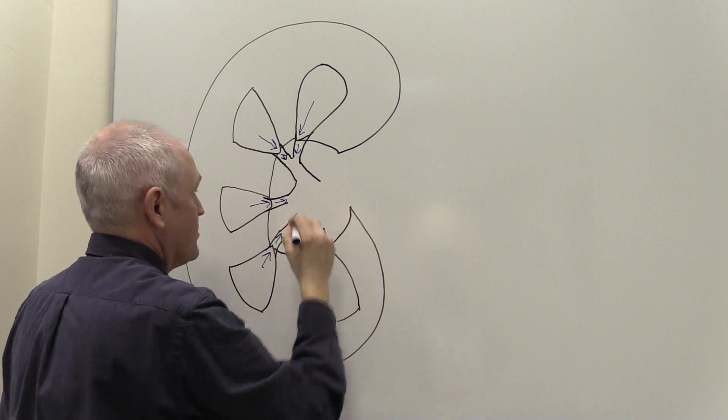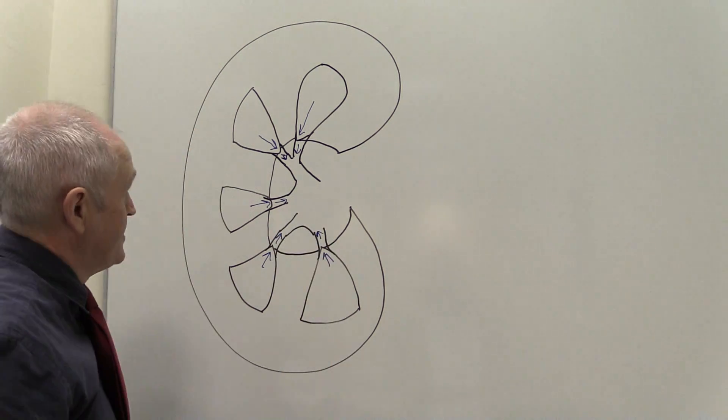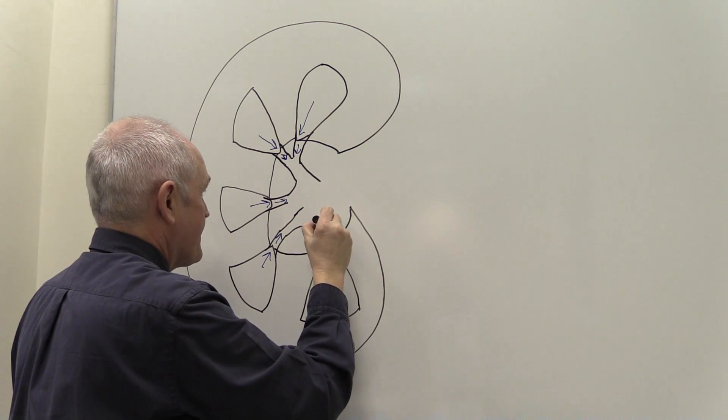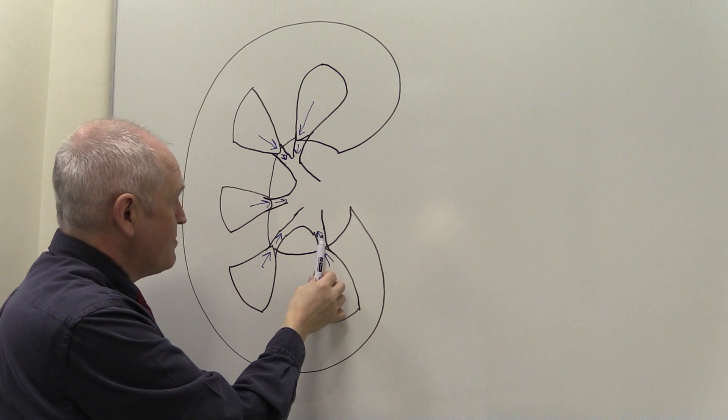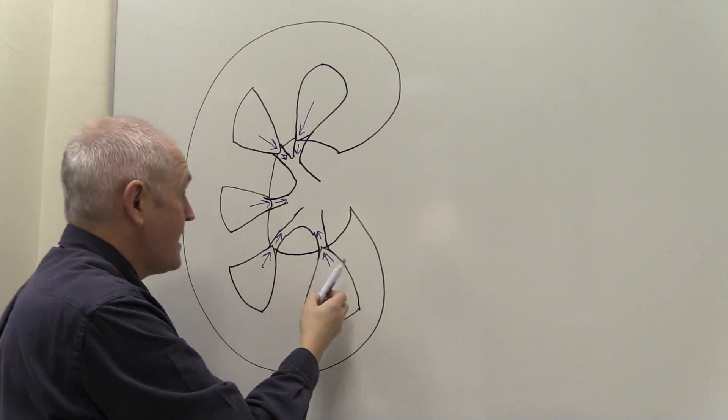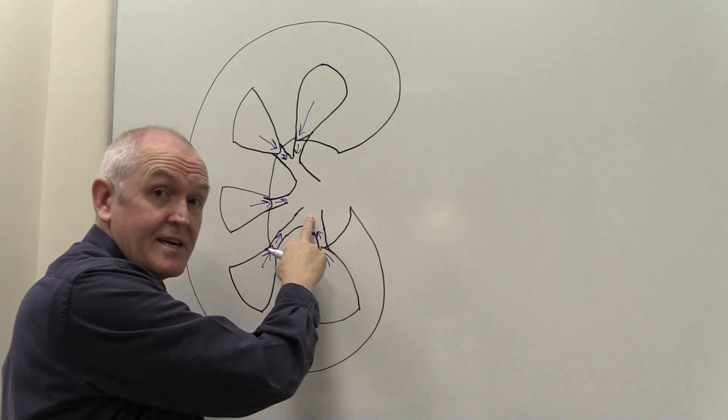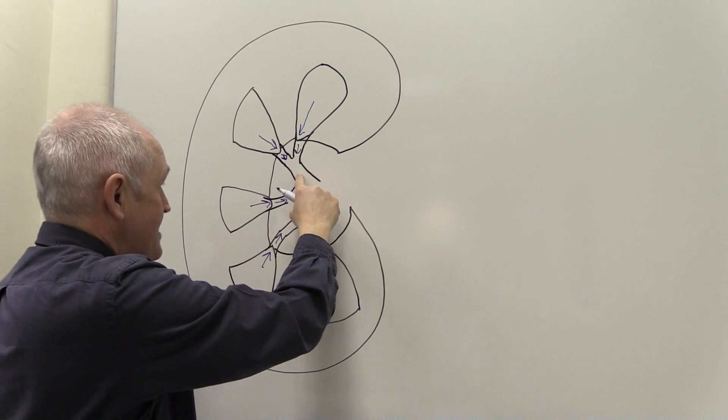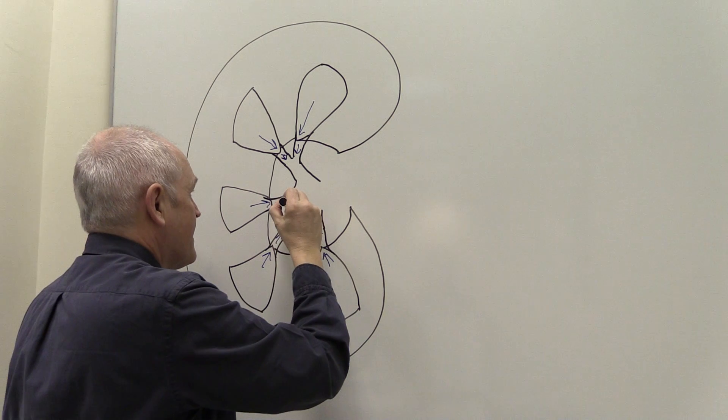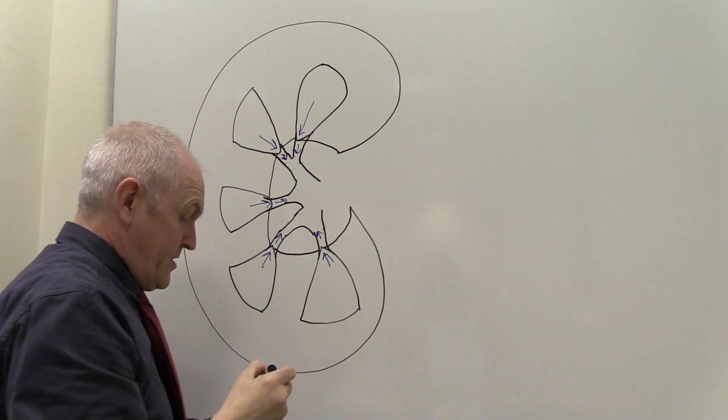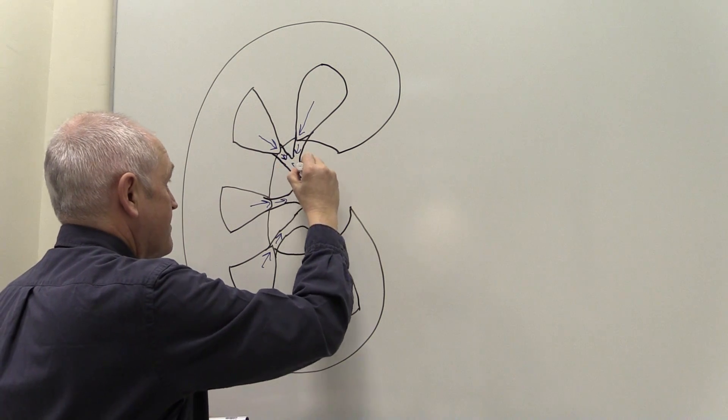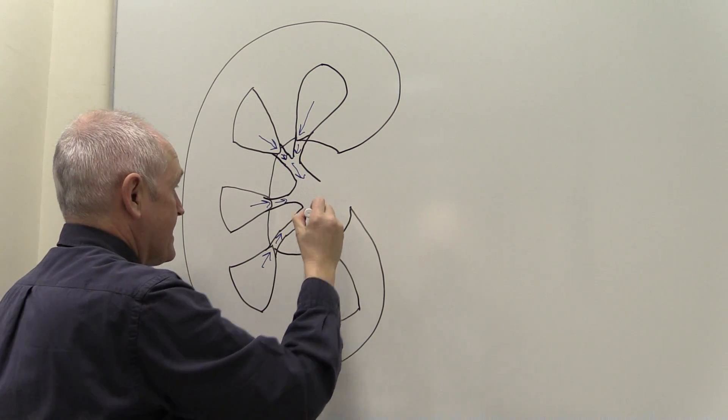In practice, of course, there's more medullary pyramids than this - I'm just simplifying it for the sake of the diagram. So here we see two minor calyces have converged to form a major calyx. Again here, minor calyces forming a major calyx. So that means the urine is going to pass from a minor calyx through into a major calyx.